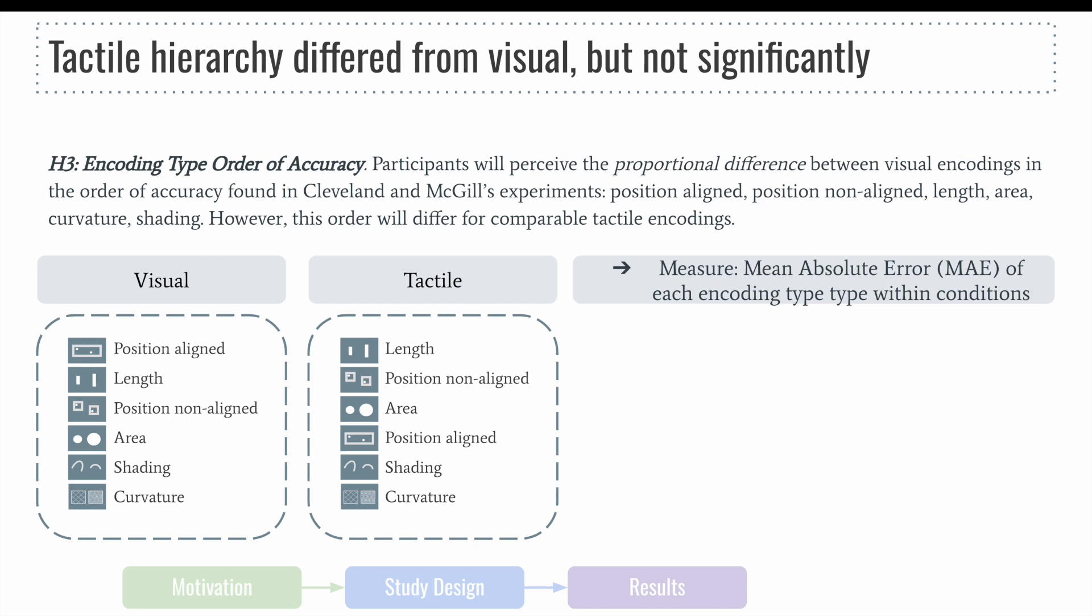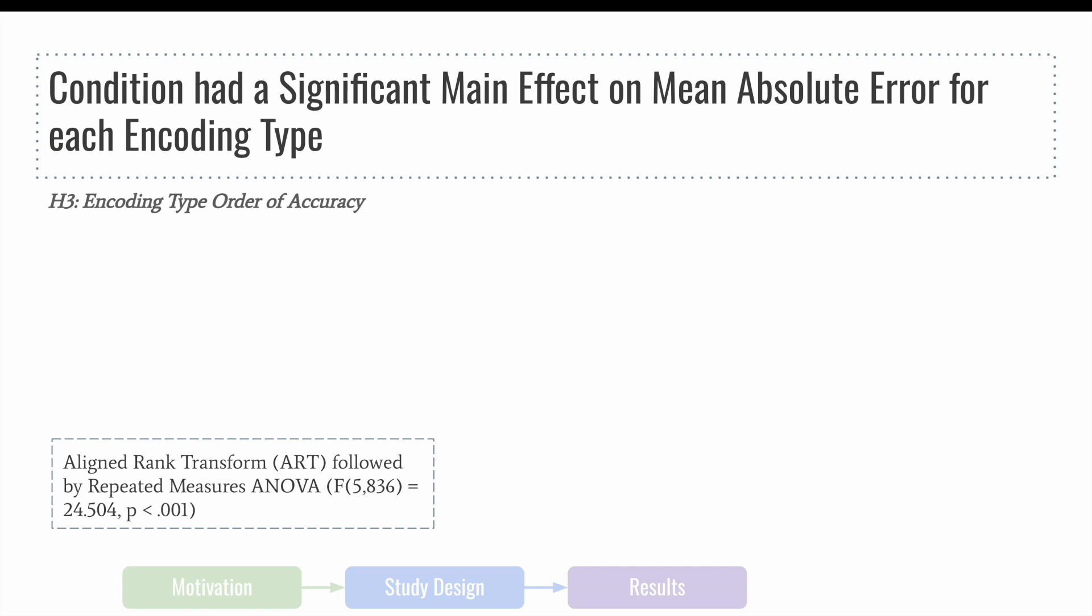For our next hypothesis, we observed minor differences in the visual condition's order of accuracy compared to Cleveland and McGill, and drastic differences in the tactile condition. On this slide, Cleveland and McGill's order of accuracy is shown on the left-hand side, ordered from top being the highest error with the lowest accuracy to the bottom with the lowest error and highest accuracy.